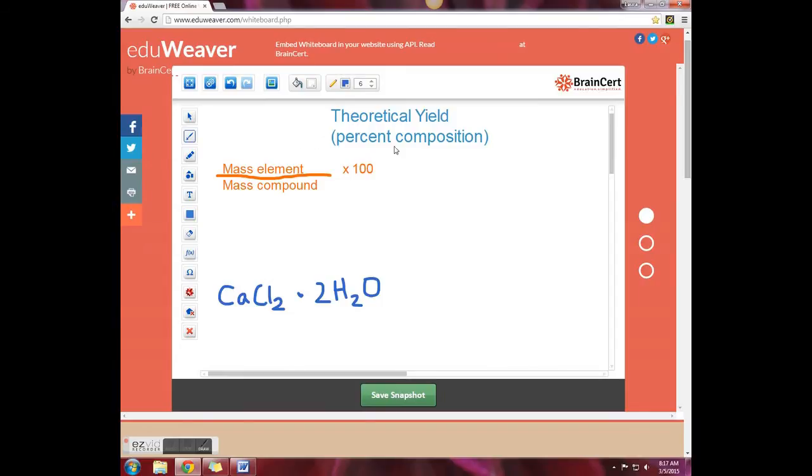When we first looked at percent composition of a compound, we saw that the mass of the element divided by the mass of the compound times 100 tells us the percent by mass for each element.